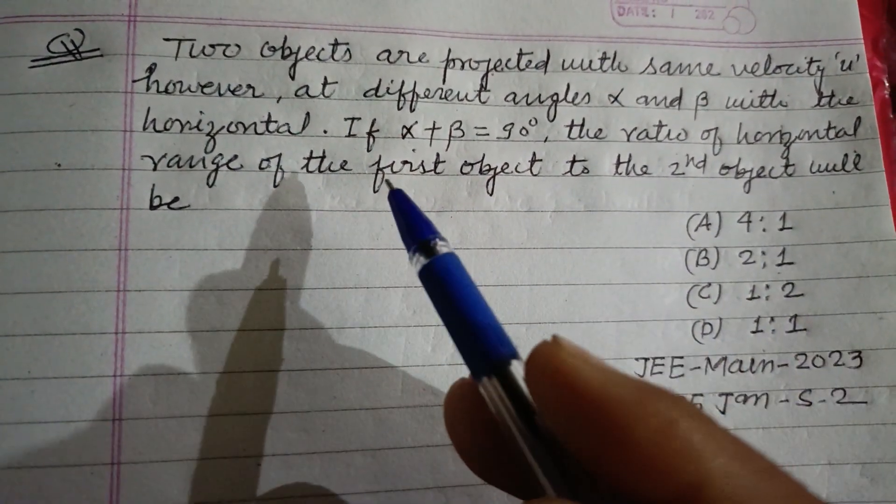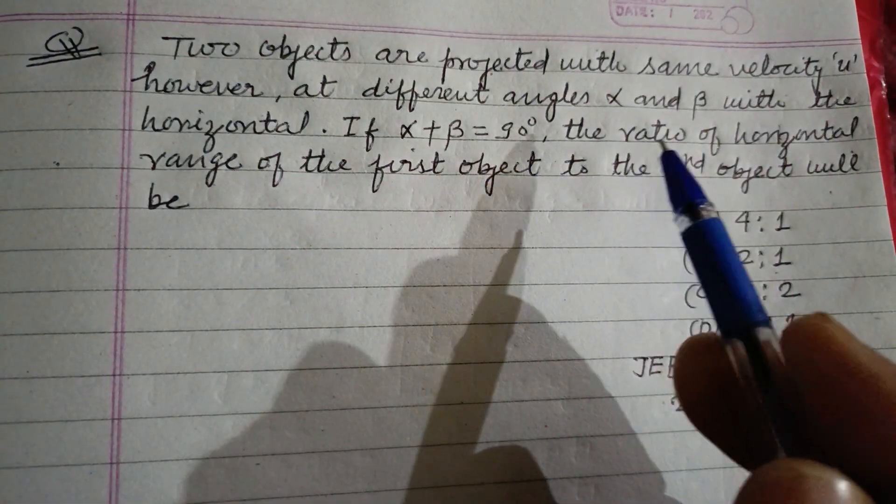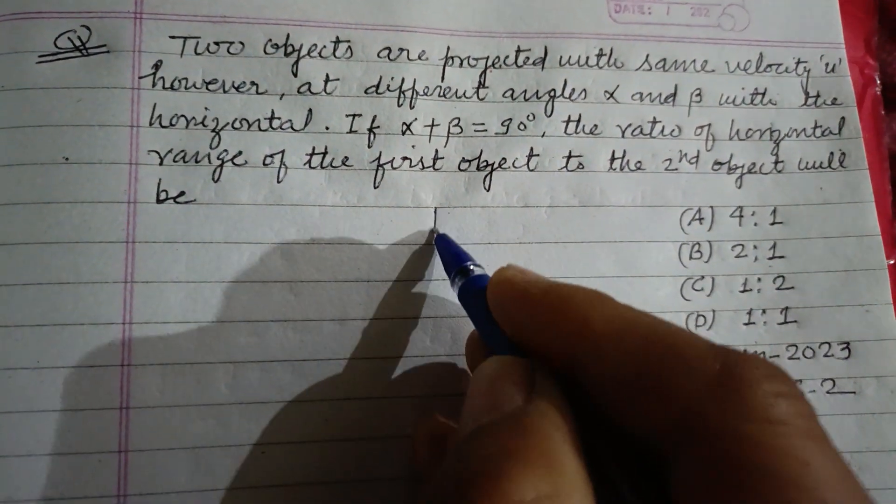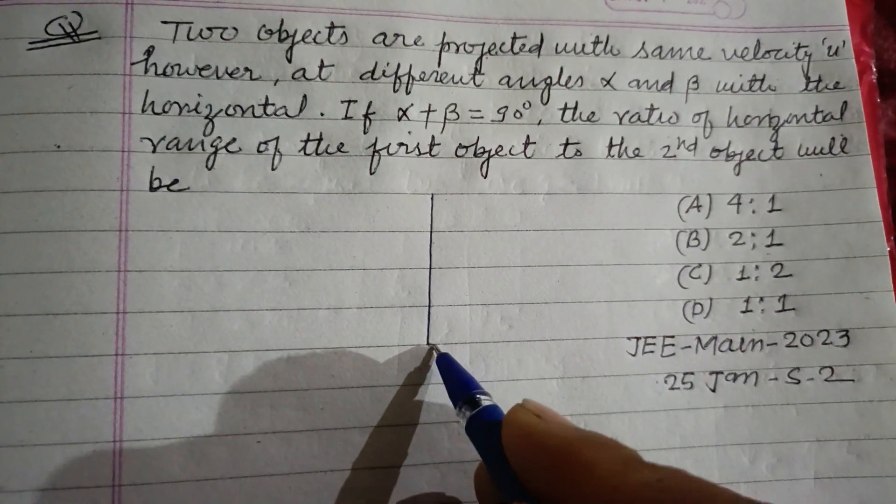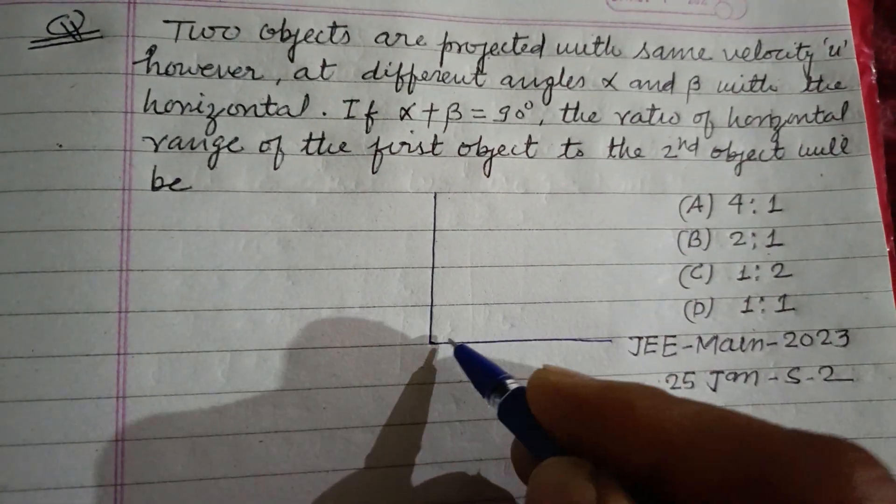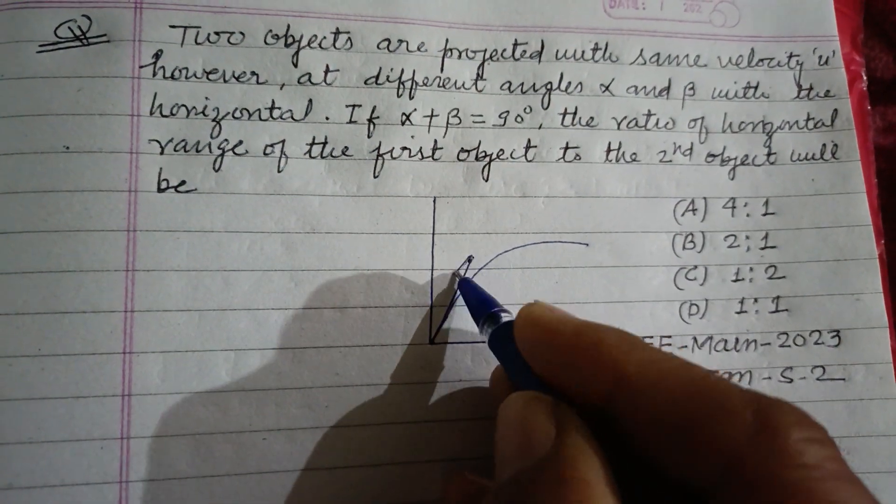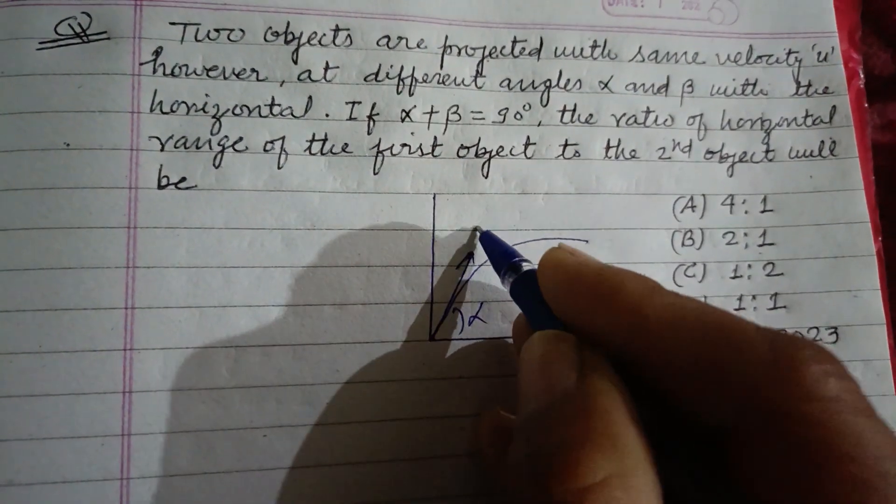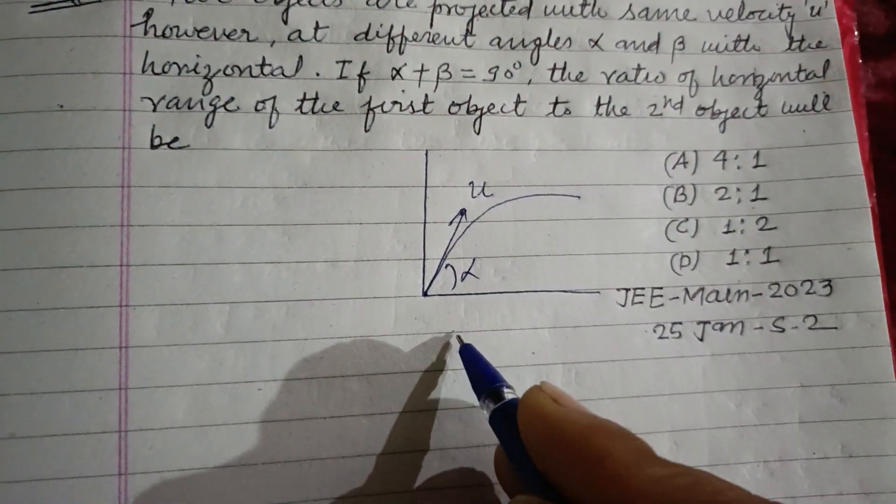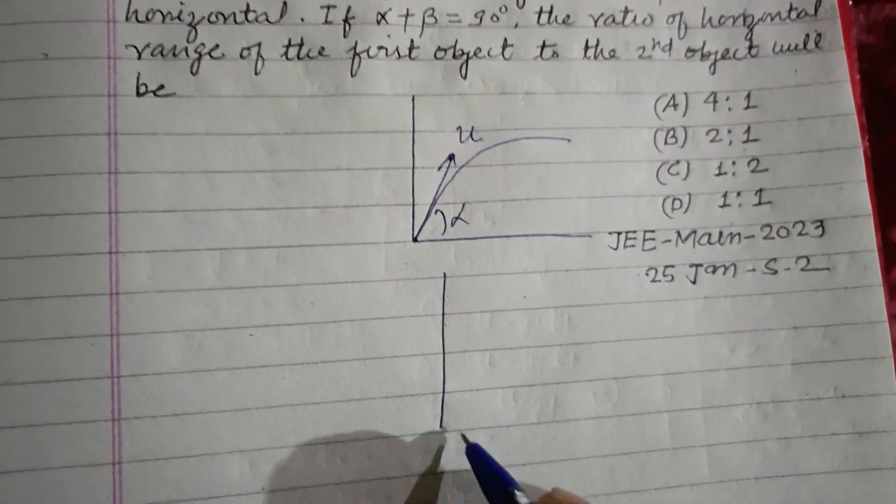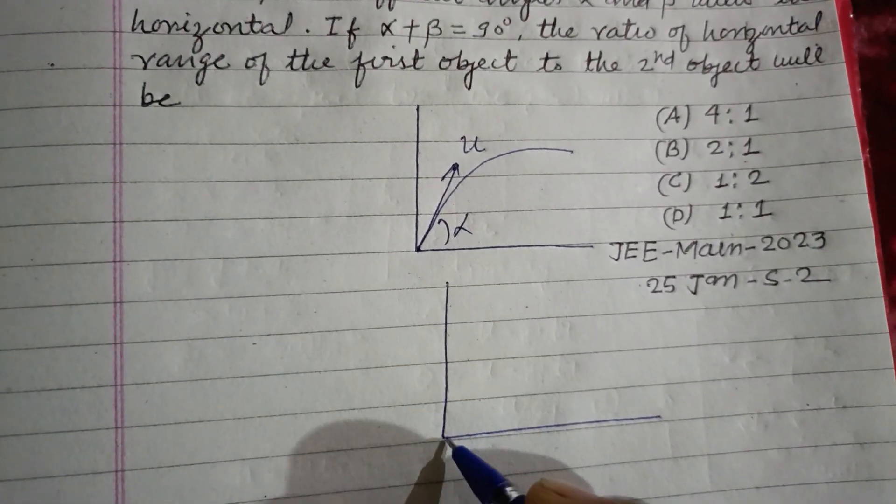However, at different angles alpha and beta. So here are two objects which are projected at angle alpha with velocity u, and another object is projected at angle beta.